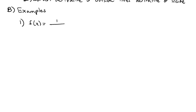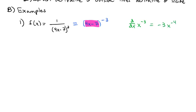Let's say we have f(x) = 1 over (4x − 7) cubed. We could use the quotient rule, but that's too much work since we just have a 1 in the numerator. This is really (4x − 7) to the negative 3 power, because the negative exponent makes it a reciprocal. So we have the block (4x − 7) all raised to the negative 3 power.